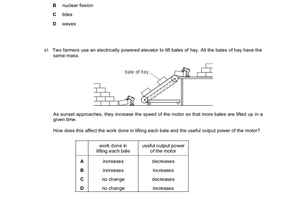So, 45, these farmers are in trouble. Sun's setting, and they want to get those bales up there as quickly as possible. So what they've done is they've increased the speed of the motor. That means more bales are lifted up in a given time. So some important words there. Don't just gloss over that. There's some important words there. How does this affect, first of all, the work done in lifting each bale? So notice how it says each bale there. Well, if we think work done is just force times distance. The bales are still the same mass, as it says up here. And they're still moving the same distance. So there's some force being applied to overcome that mass. And it's still moving the same distance up to there. So the work done is still going to be the same.